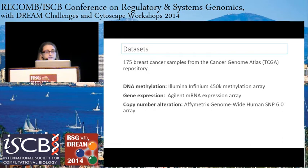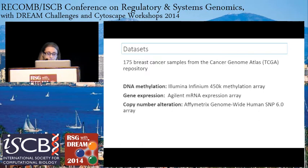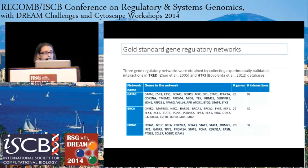For the results, we downloaded 175 breast cancer samples from the Cancer Genome Atlas — the DNA methylation, gene expression, and copy number alteration data sets on their respective platforms. We collected experimentally validated interactions in the TREAD and HTRI databases, and used three networks: the GTA3, the BRCA, and FOXA1 networks, defined by their number of genes and interactions. When I say the GTA3 network, there are 25 genes — it's named after the major hub, but it refers to the whole network, not just the gene.